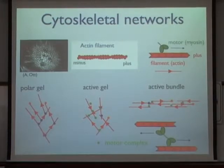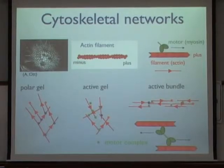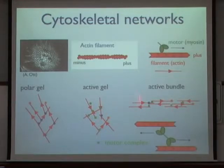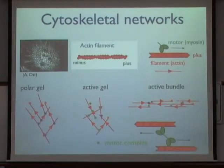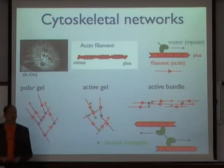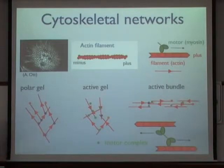Because filaments are structurally polar they have a vectorial symmetry, and in the gel filaments can on average point in certain directions — this is what is called a polar gel. Filaments can also bundle and form contractile stress fibers that exert forces in cells. These are examples of rather disorganized cytoskeletal structures that occur in cells, driven by motor proteins with mechanical properties different from what simple passive materials would exhibit.